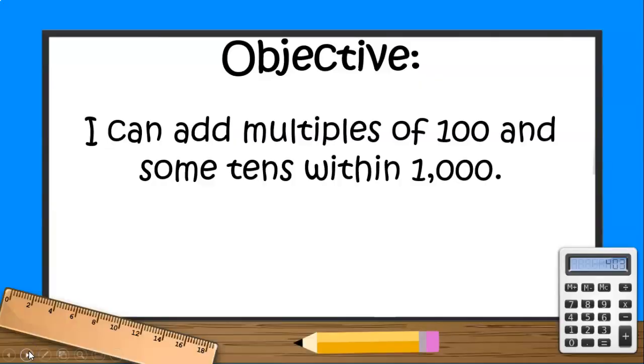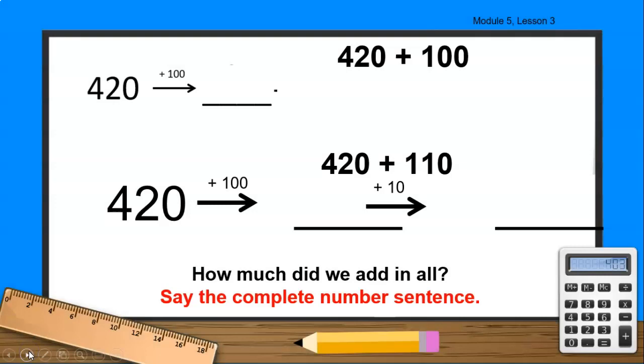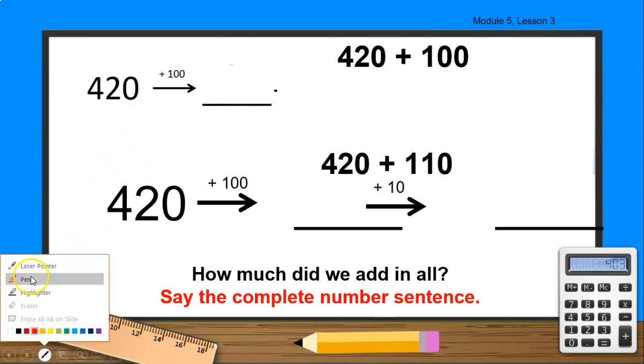So what is our objective for today? Today, you can add multiples of 100 and some tens within 1,000, boys and girls. Let's see how that looks like. So remember that today we are solving some addition problems using the arrow way. And the arrow way is a strategy that you use to solve an addition problem that helps you work a quick tip. First thing I'm going to do is I'm going to click on my pen and I am going to choose the color blue.